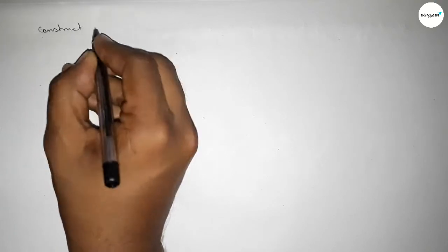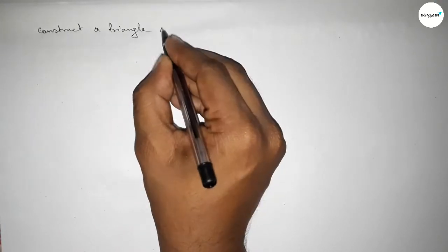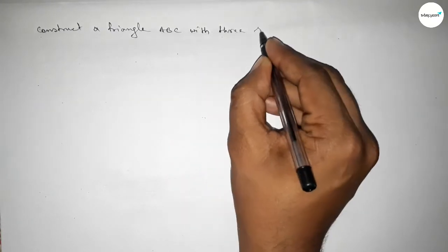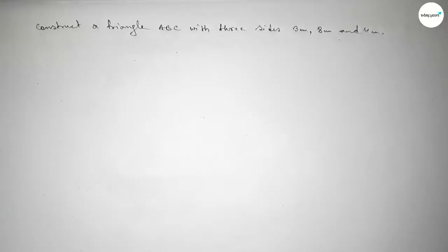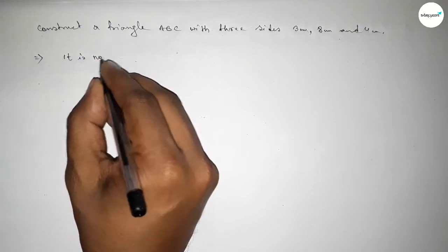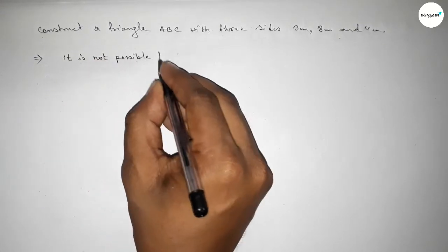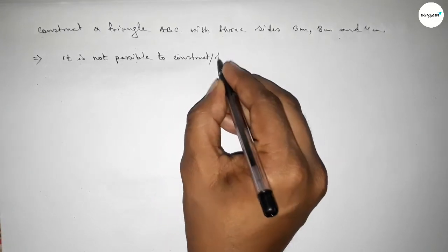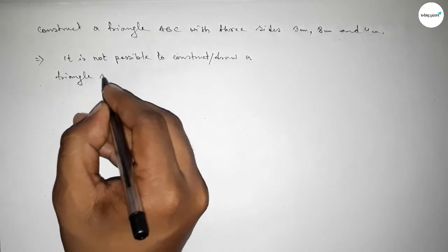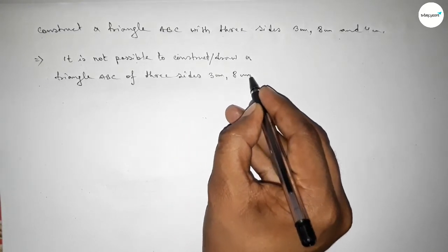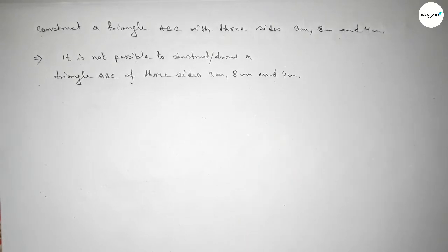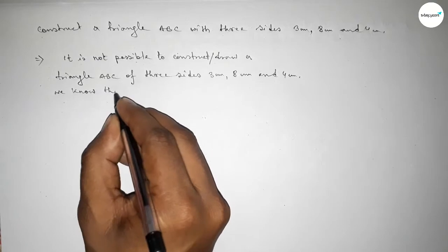Hi everyone, welcome to SSR Classes. Today we are discussing the construction of a triangle using three sides: three centimeters, eight centimeters, and four centimeters. It is impossible to construct or draw a triangle using these three sides.